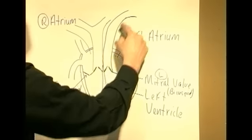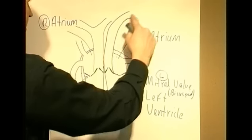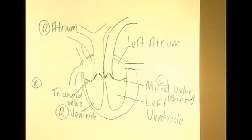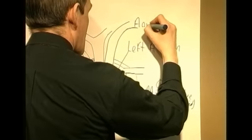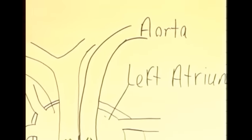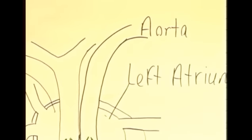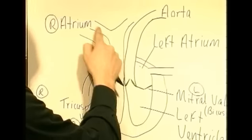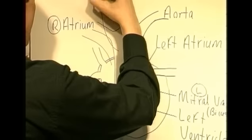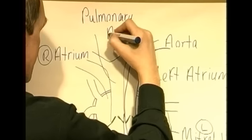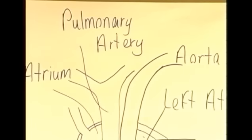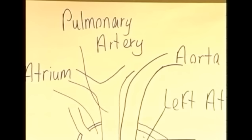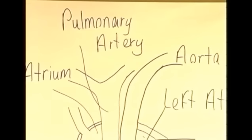Now this large vessel leaving the left ventricle is the vessel which carries blood around the systemic circulation — to the brain, to the liver, to the feet, everywhere except the lungs. And this large vessel is referred to as the aorta. Leaving the right ventricle we have another large vessel which rapidly divides into two — this is the pulmonary artery, dividing into the left and right pulmonary arteries carrying blood to each lung.